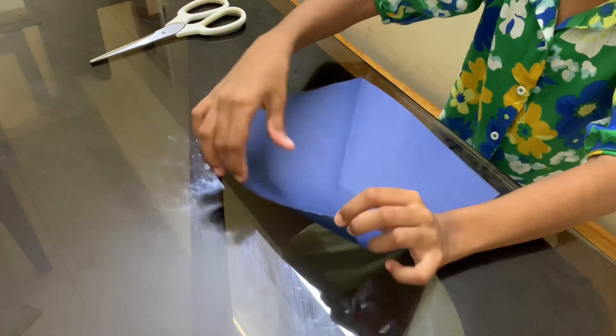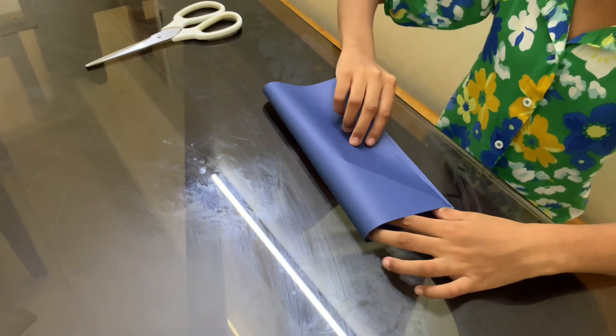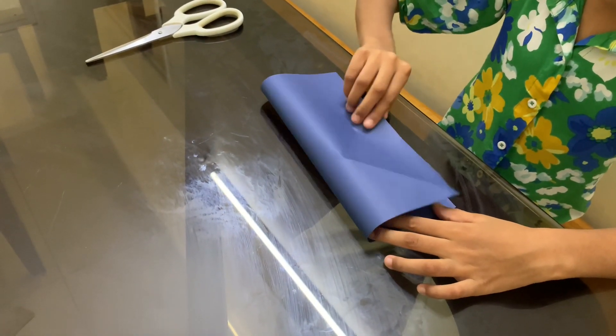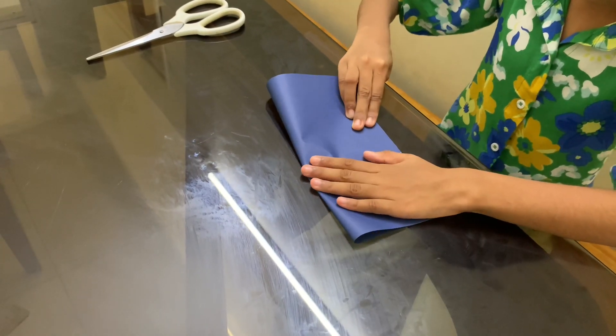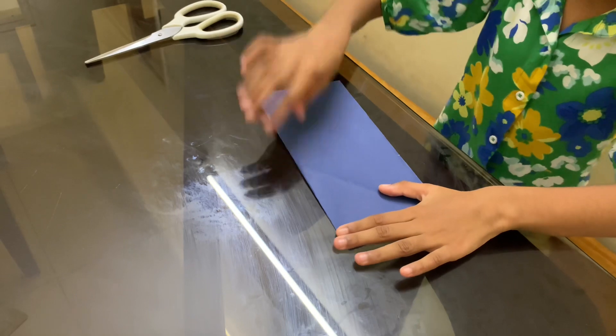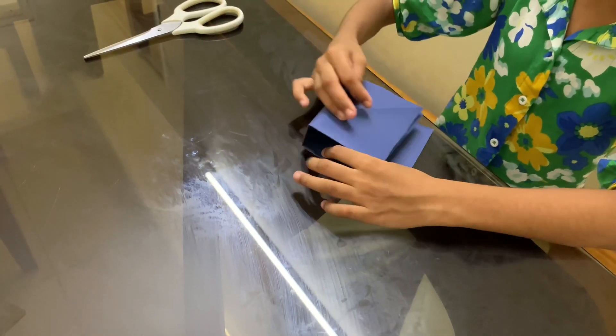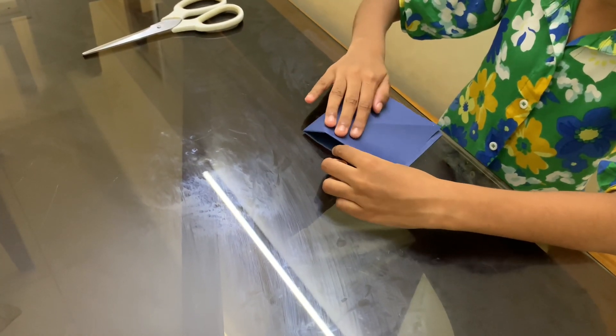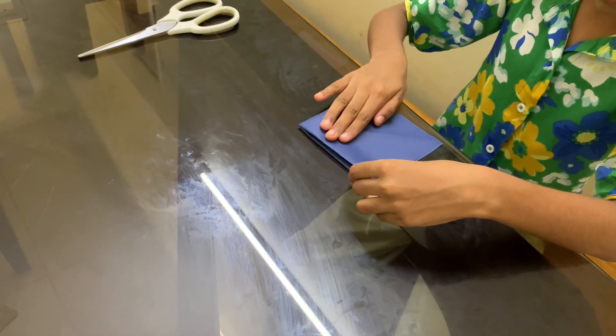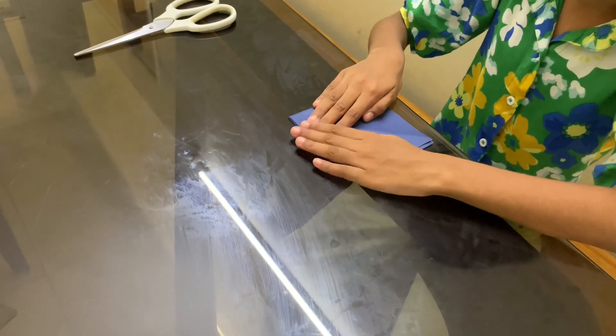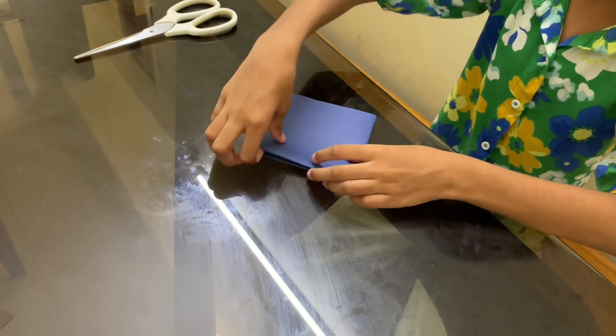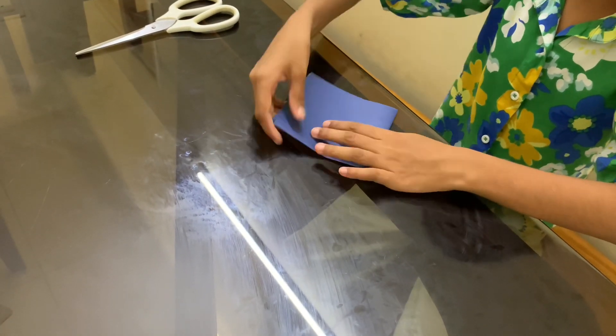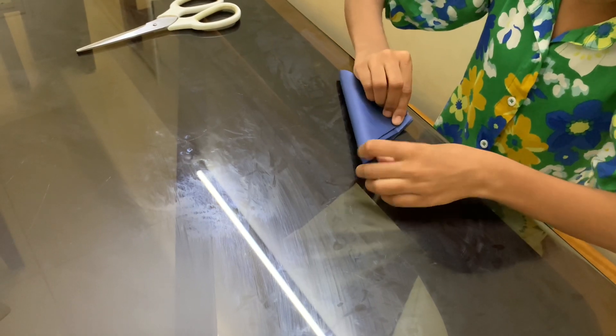From this square shape, you have to take like this. Then again fold it. Then, you know how to shape it in a triangle shape. Just fold it in a triangle shape.